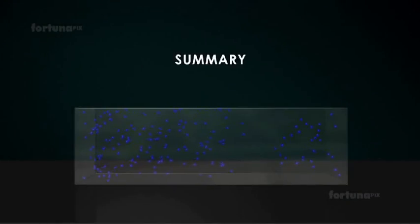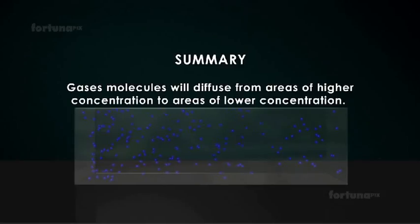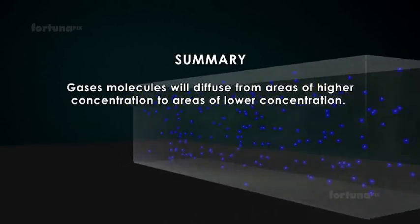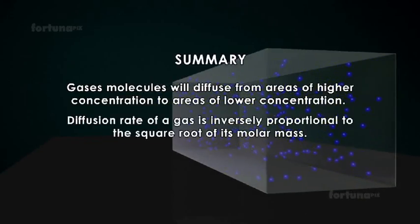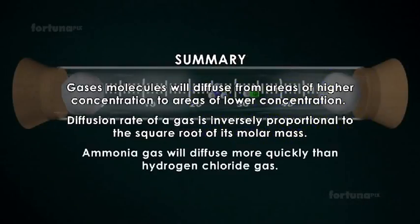Summary: Gas molecules will diffuse from areas of higher concentration to areas of lower concentration. Diffusion rate of a gas is inversely proportional to the square root of its molar mass. Ammonia gas will diffuse more quickly than HCl gas.